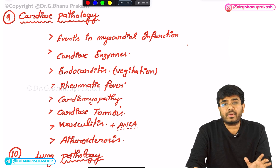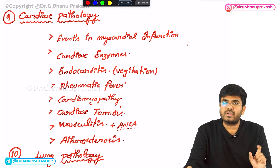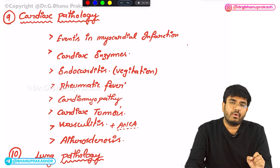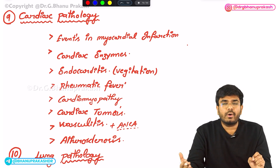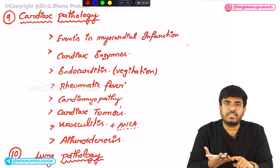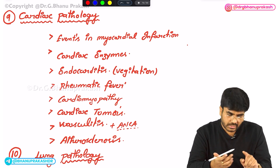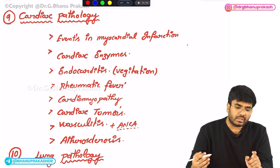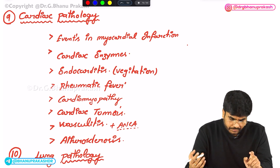Moving to systemic pathology — in cardiac pathology, you have to know in and out about myocardial infarction: the events during MI, what the cardiac biomarkers are, which cardiac enzymes rise initially, which last to rise, and how long they persist. You have to know the cellular changes, histological changes, light microscopic changes, and electron microscopic changes seen in MI.